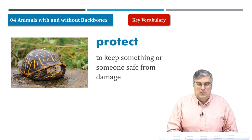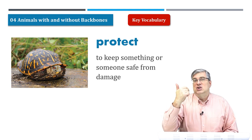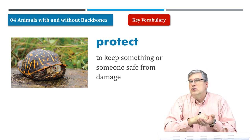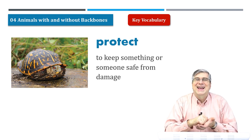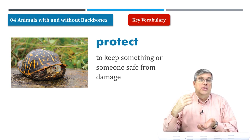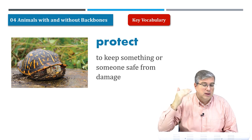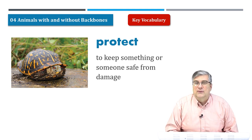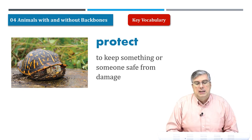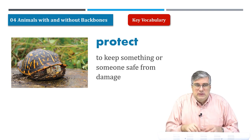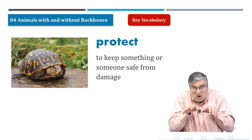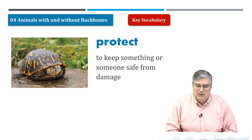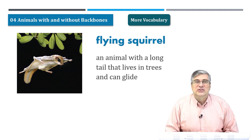Our next word is protect. We saw that coverings and shells are hard surfaces — but why do crabs and turtles have shells? Because they want to protect themselves from other animals. The shell protects them and keeps them safe from damage. A turtle can stick its head and legs inside its shell, so nothing can get in and the turtle is safe.